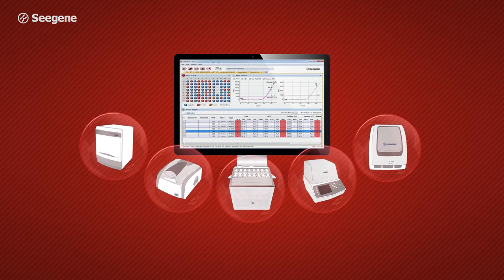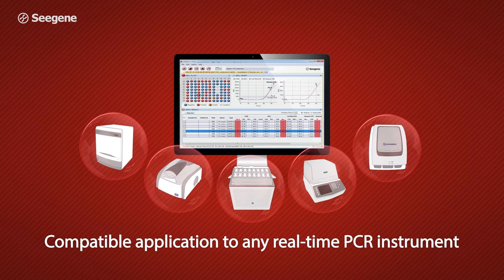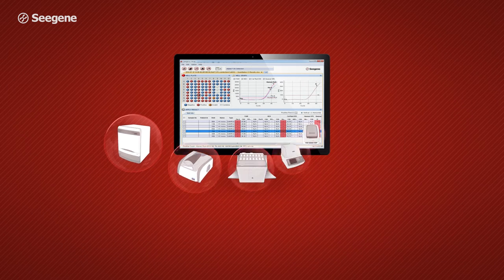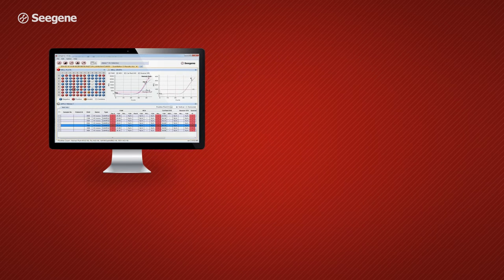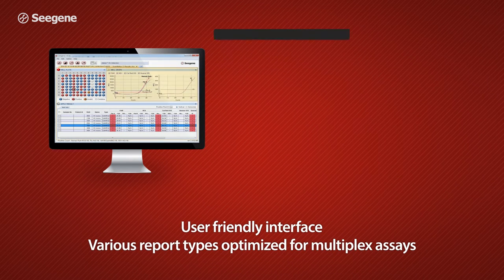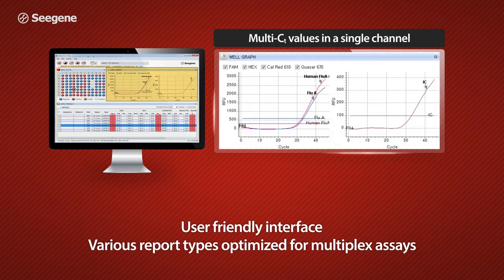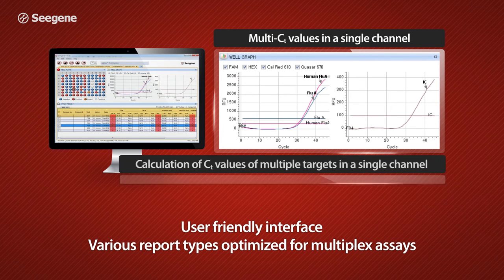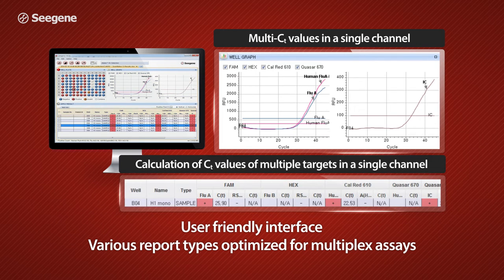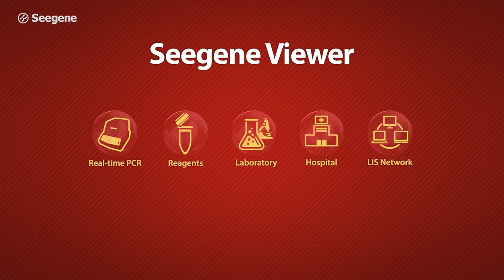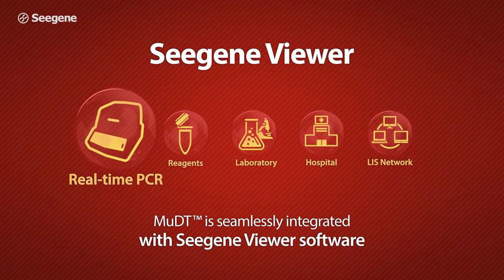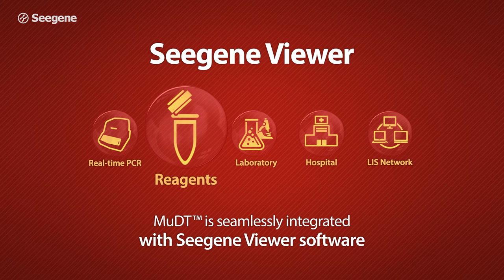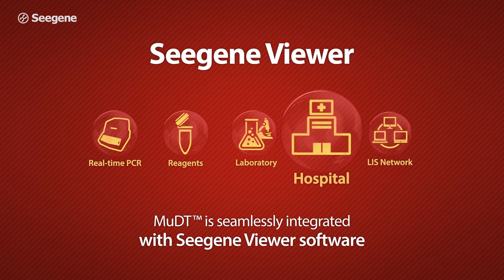C-Gene viewer analysis package is compatible with any real-time PCR instrument. Use our intuitive and easy-to-use software to analyze multiple CT values of targets in a single channel. C-Gene viewer provides color-coded result interpretation, graph images, and result sheets of test samples. Furthermore, C-Gene viewer's open architecture is compatible with most LIS software systems for seamless data workflow.